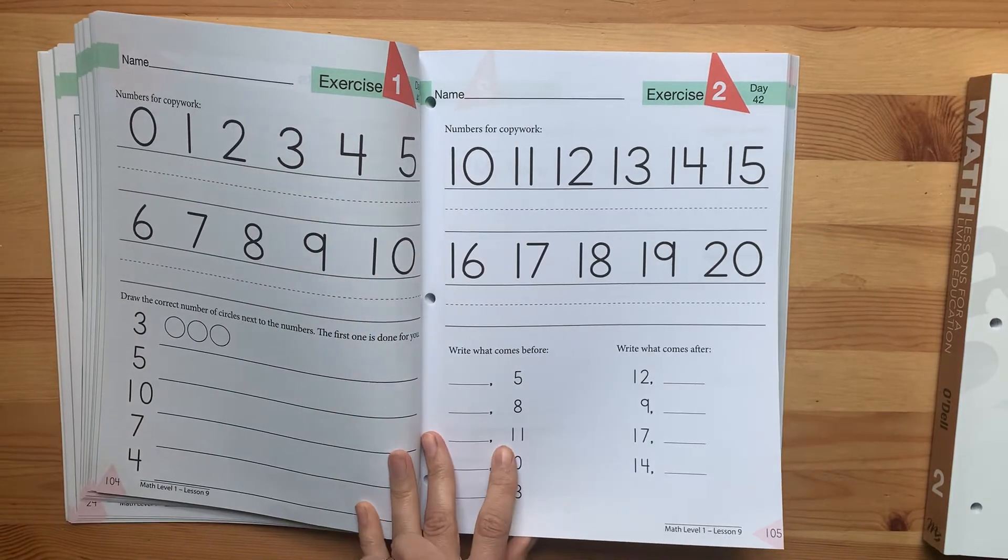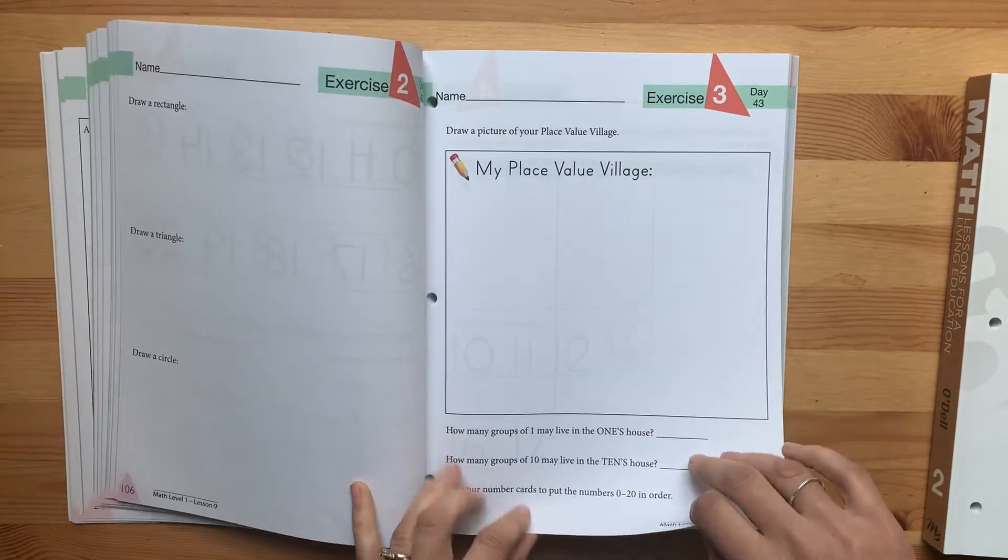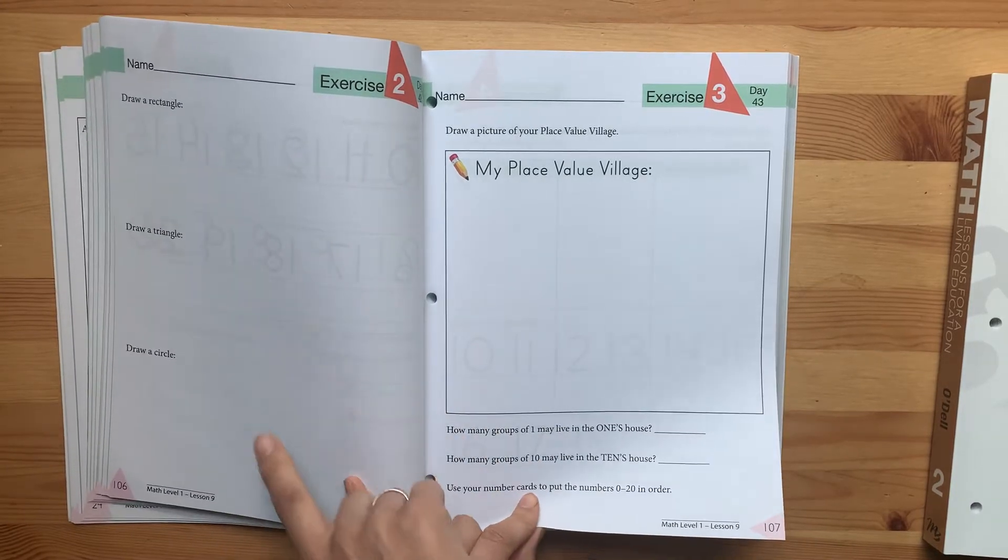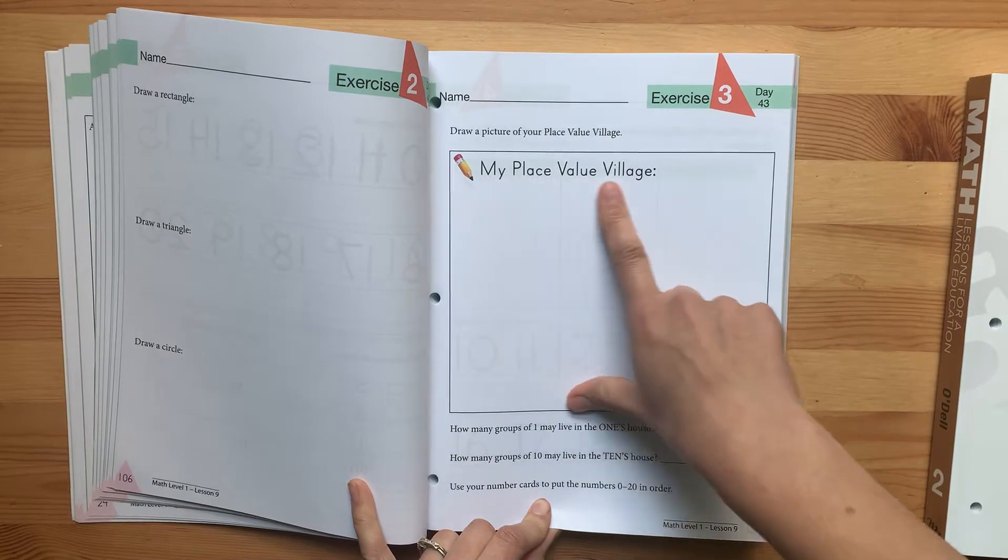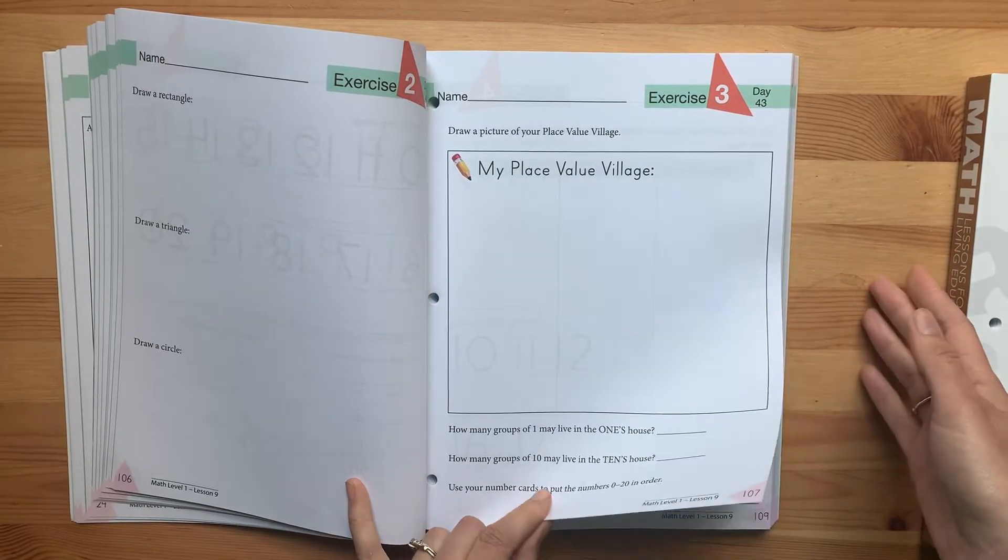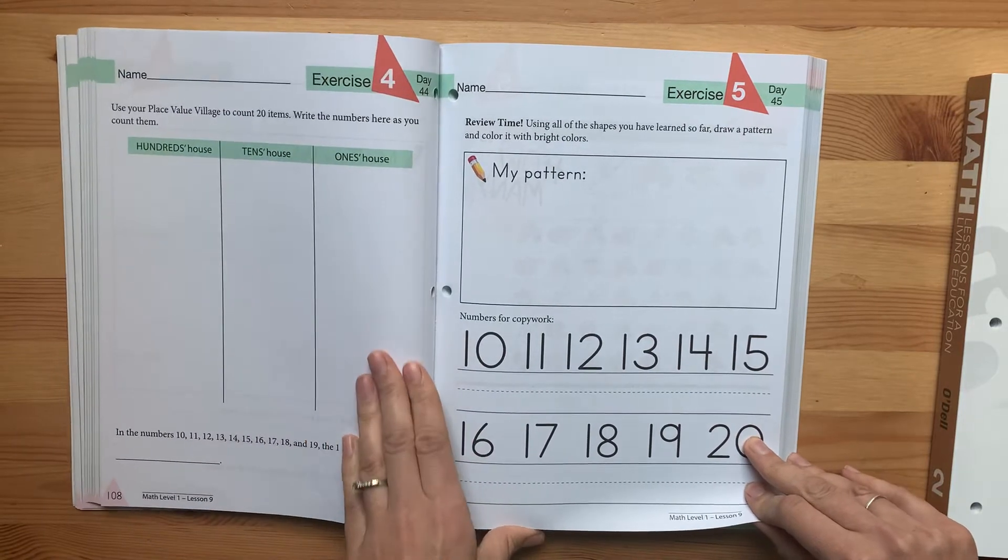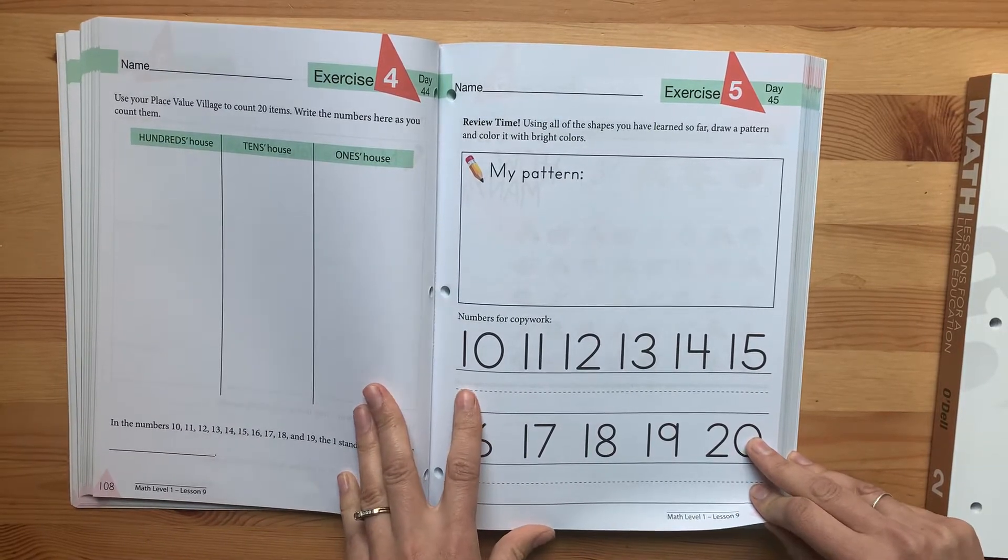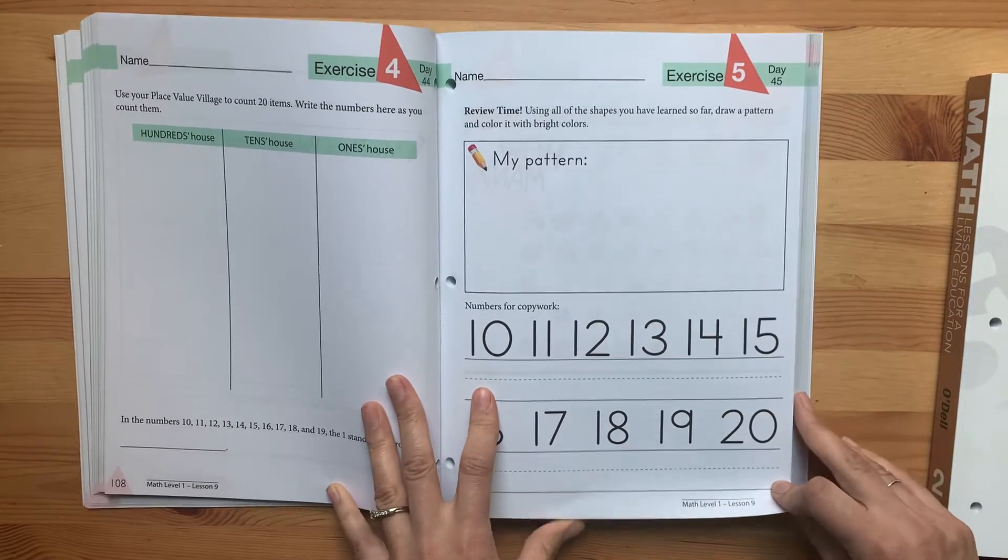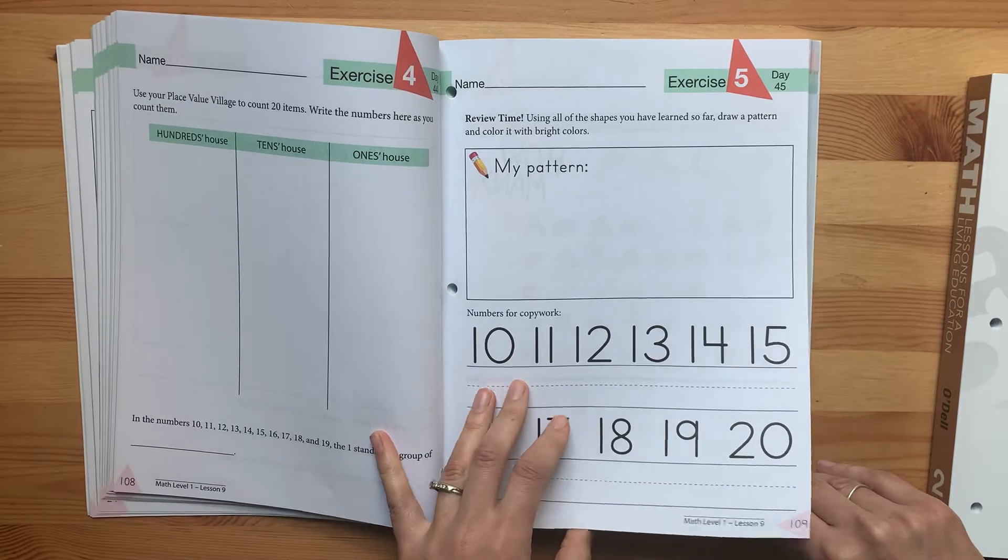Copying, drawing the correct number of circles next to the numbers, draw a rectangle, draw a triangle, draw a circle. Here's where you will have my place value village where you would have to get out the houses I showed you in the back. No manipulatives come with this so you'll have to use whatever you have at home. You could use rocks or beans or buy anything that you wanted to represent addition and subtraction.